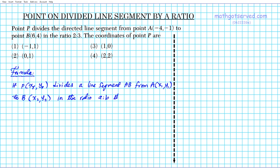Then, now this is what we need. What are the coordinates of X sub P and Y sub P? X sub P is going to be the X coordinate of the initial point X1 plus A over A plus B times X2 minus X1.